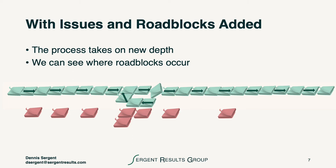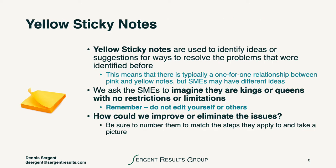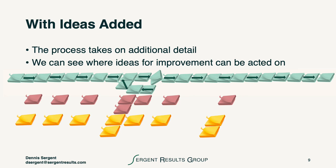Our next stage is to move on to the yellow sticky notes. This is our opportunity to use yellow sticky notes to identify ideas or suggestions for ways to improve the problems or eliminate them. There's typically a one-for-one relationship between the pink and yellow notes, but subject matter experts may have multiple ideas for improving or eliminating problems. We ask the subject matter experts to imagine for a brief while that they're the kings or queens of this system with no restrictions or limitations, and that they should not edit themselves or others. Once we have the ideas added, you can see not only where the issues are in the process, but where there are ideas and opportunities for improvement from the people who work closest to the process.